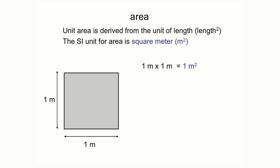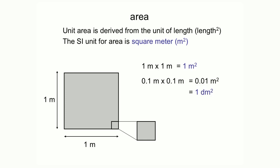If we shrink the sides of this square by 10 times, we have a much smaller square. The area of this square is 0.1 meter times 0.1 meter, and that is 0.01 meter squared. And because 0.1 meter equals a decimeter, the area of this smaller square equals 1 decimeter squared. We see that 1 decimeter squared is 100 times smaller than a meter squared. Shrinking again by 10 times, the area equals 0.01 decimeter squared, and because 0.1 decimeter equals a centimeter, the area equals 1 centimeter squared — a hundredth of a decimeter squared.